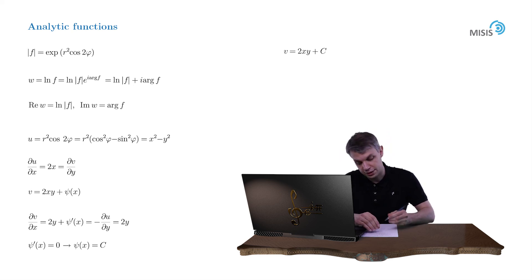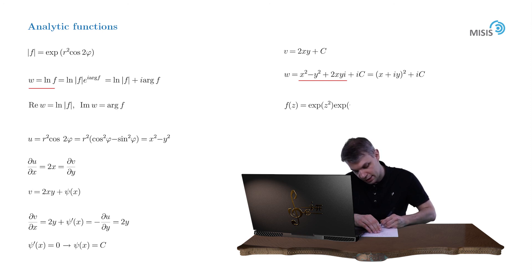Therefore, the full structure of w function is also restored. It's equal to x squared minus y squared plus 2xy plus ic. And we see that the first three terms can be organized into x plus iy squared. And recalling that our w function is nothing but the logarithm of our original function, we obtain the expression for our original function f up to some multiplicative constant. f of z is equal to e to z squared times e to ic.